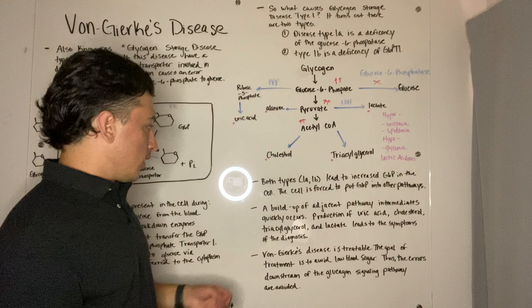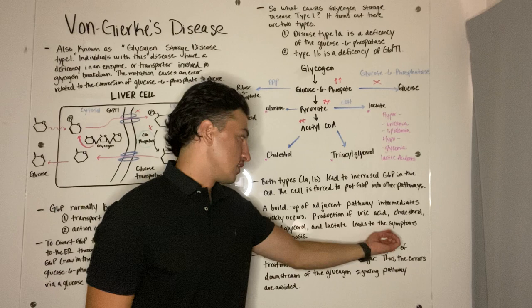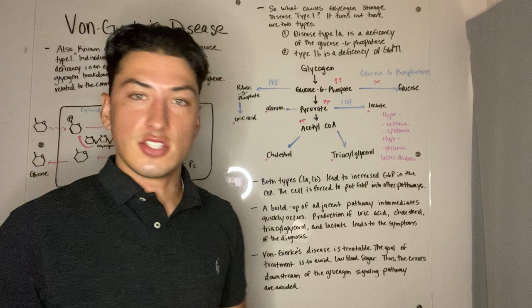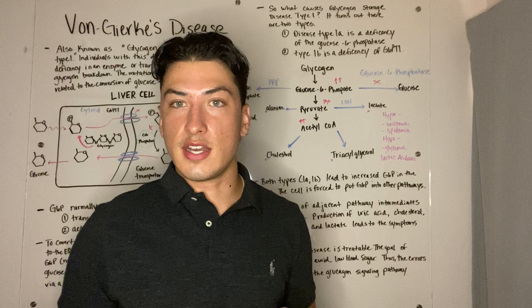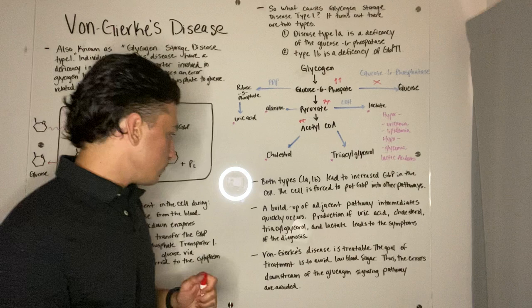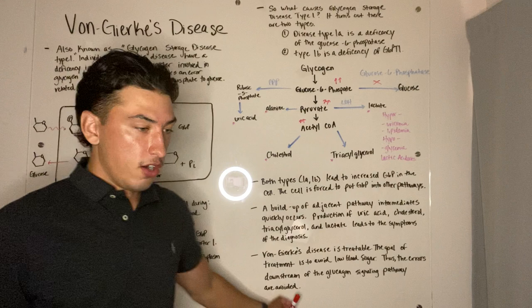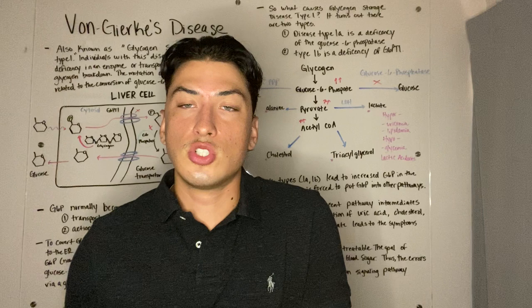A buildup of adjacent pathway intermediates quickly occurs. Production of uric acid, cholesterol, triglycerol, and lactate lead to the symptoms of the diagnosis. The condition is treatable, however. The goal of treatment is to avoid low blood sugar — when we avoid low blood sugar, glucagon does not need to signal, and therefore we limit the amount of intermediates that are built up and won't undergo these symptoms. So the errors downstream of the glucagon signaling pathway are avoided. By giving patients slow-digesting carbohydrates, we can ensure that blood glucose levels don't drop to a level where glucagon begins to signal and we have errors in our pathway associated with the disease.